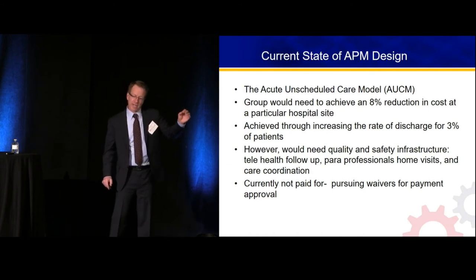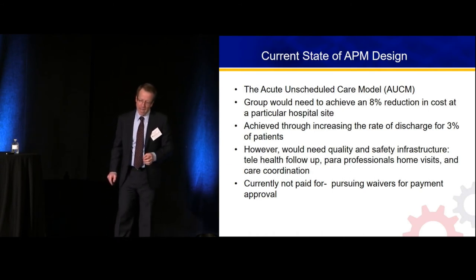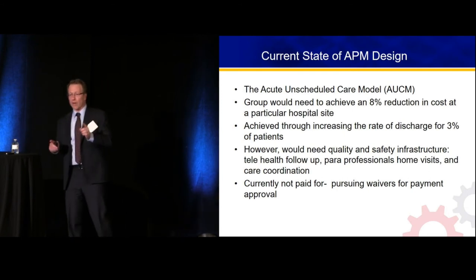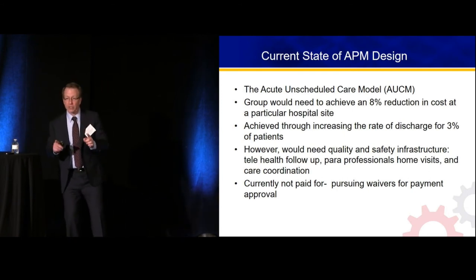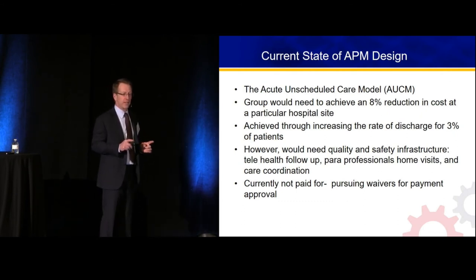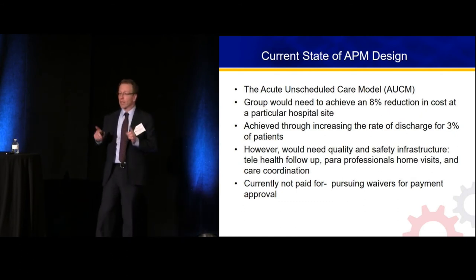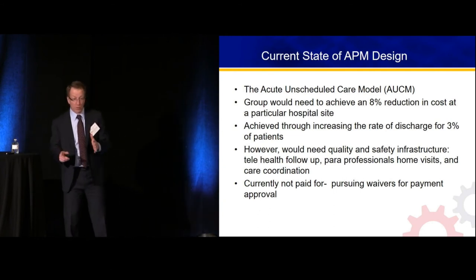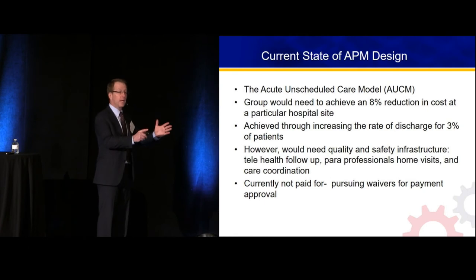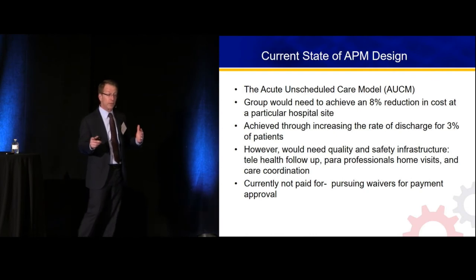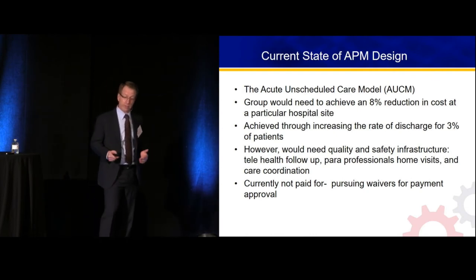So how are we going to solve this puzzle? This is the ultimate cost-conscious move on the part of the government. The carrot being dangled is: if we are able to increase the rate of discharge — to discharge 3% more of our patients — we will qualify for certain economic bonuses. We're going to take patients we previously put in the hospital and figure out a way to send them home.